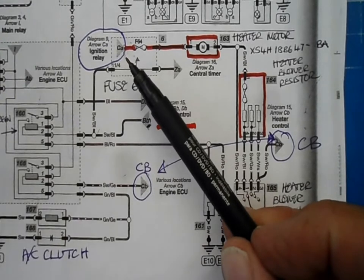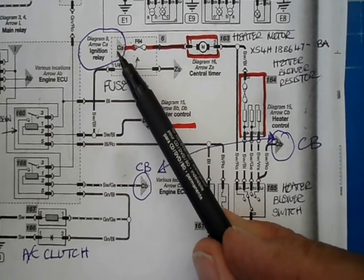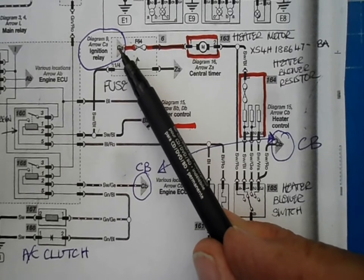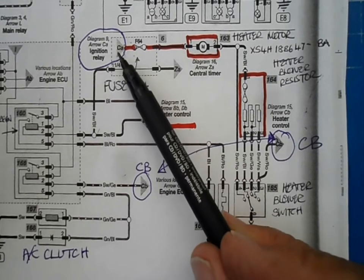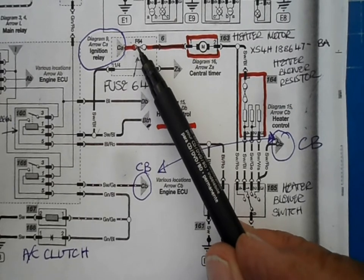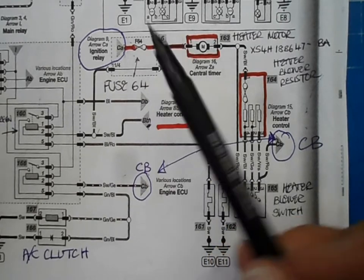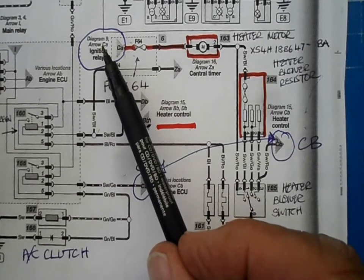And it comes from a diagram here CA. So we need to find out where CA is, because CA, whatever that is, feeds fuse 64. So that will be one of the first things we're going to check. Obviously fuse 64 is okay. So it's working back to the power from the battery.